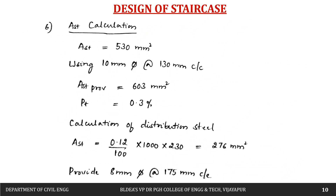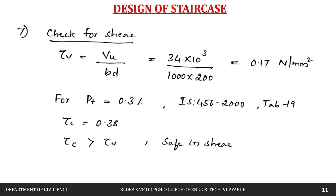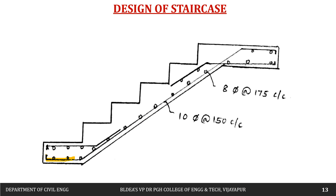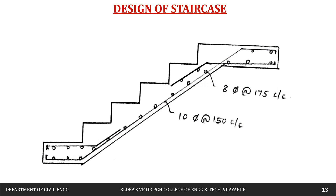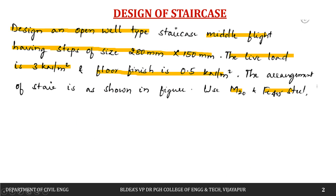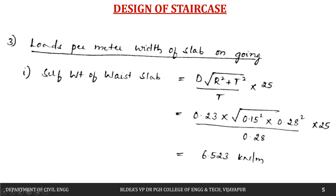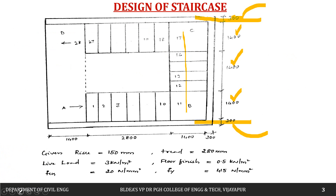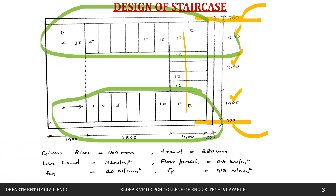Based on the design, the main reinforcement is 10 mm dia bars at 150 mm center to center along the longitudinal direction, and distribution steel is 8 mm dia bars at 175 mm center to center. This completes the design of flight BC. Similarly, flights AB and DC can be designed following the same guidelines.